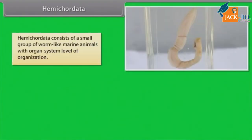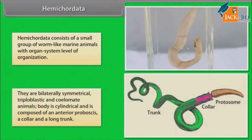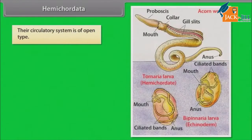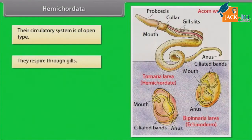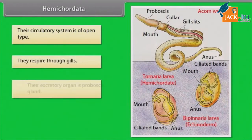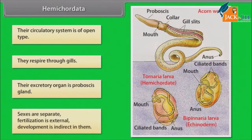Hemichordata consists of a small group of worm-like marine animals with organ system level of organization. They are bilaterally symmetrical, triploblastic and coelomate animals. The body is cylindrical and is composed of an anterior proboscis, a collar and a long trunk. Their circulatory system is of open type. They respire through gills.